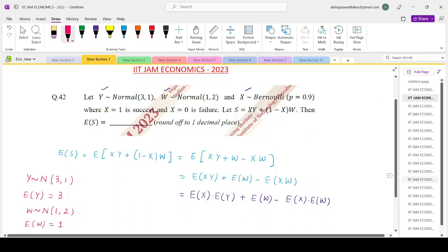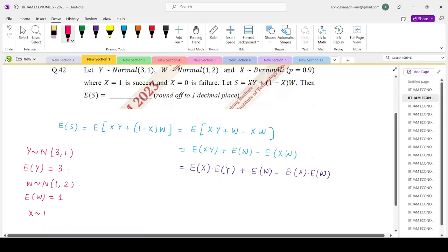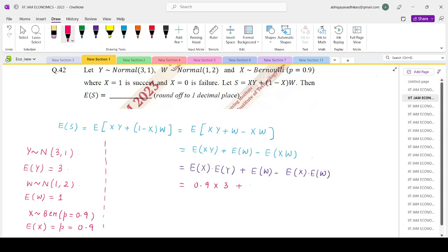X follows a Bernoulli distribution with p=0.9. If you recall, the expectation of a Bernoulli distribution is p, which is 0.9. Replacing these values: expectation of X is 0.9, expectation of Y is 3, expectation of W is 1. So that is 2.7 + (1)(0.1) = 2.7 + 0.1 = 2.8. Your answer rounded off to one decimal place is 2.8.